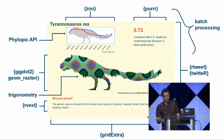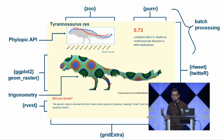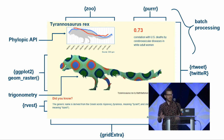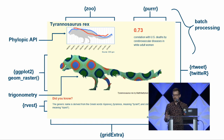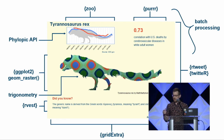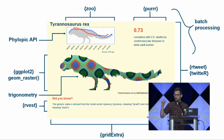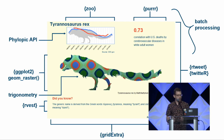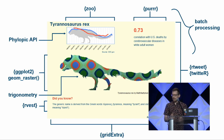Some examples: I used the PhyloPic API to get all these dinosaur images onto my computer. Geom raster actually lets me draw the dinosaur on a ggplot. Grid extra to arrange a lot of ggplots on the same chart. Rvest, because I wanted trivia facts to make this more scientific — I had to scrape Wikipedia to display some facts. I had to relearn some basic trigonometry from high school, because that's all sines and cosines. RTwitter and the Twitter API to put that into a tweet. And batch processing so I did not have to hit the enter button every time I wanted to make one of these.